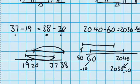So 2040 minus 60 is equal to, or balances with, 2030 minus 50. See how this number is 10 less, and this number is also 10 less, and that kept the distance between the numbers the same.